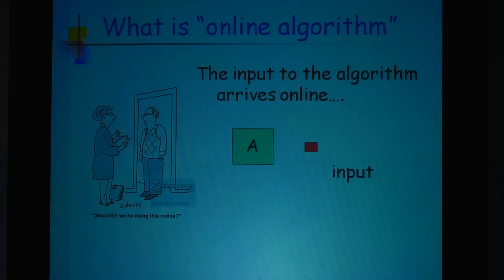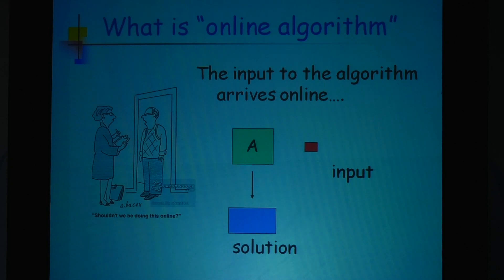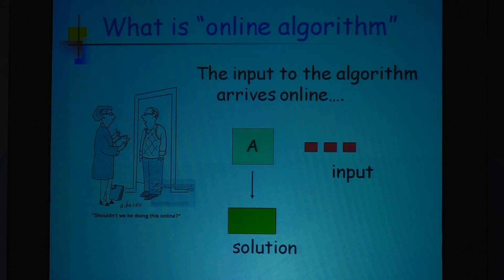For example, this could be an algorithm where input arrives and it does something with it, produces some solution, then more input arrives and the algorithm augments the solution in some manner, more input arrives and it keeps changing. That is the model.